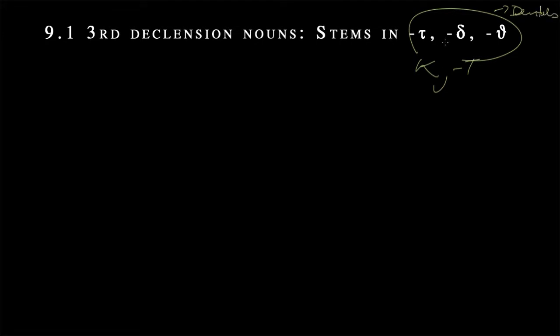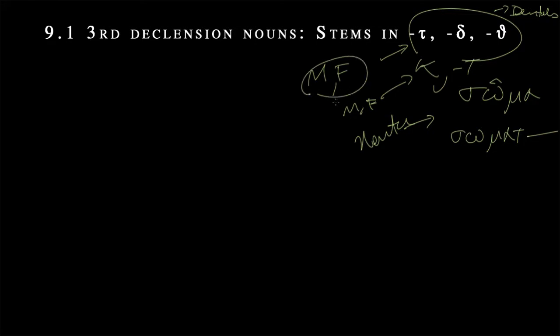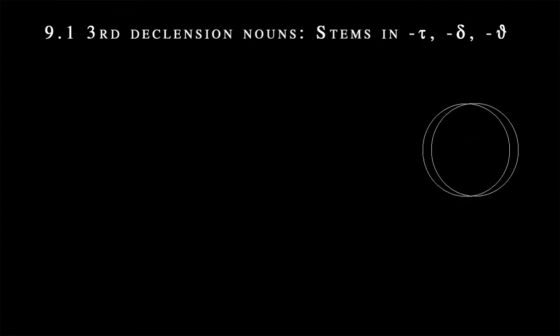So you might say, well, what's the difference between this tau and this tau? Well, this tau we're going to be dealing with mainly masculine and feminine types. That tau that we had to add earlier was with something with soma, where the nominative was soma, but then we knew that the stem from the genitive singular was somat. So that was a neuter that we were working with in the former category, but the kappa could go with either masculine or feminine. These tau, delta, theta dentals that we're working with are masculine and feminine primarily.